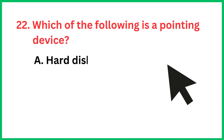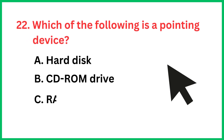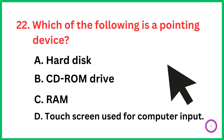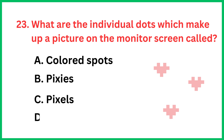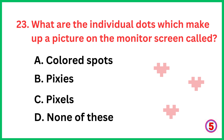Which of the following is a pointing device? The correct answer is option D. What are the individual dots which make up a picture on the monitor screen called? The correct answer is option C: pixels.